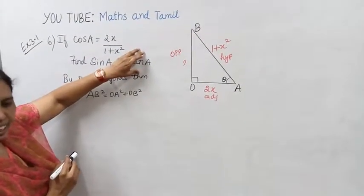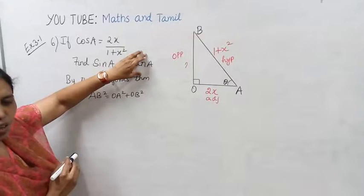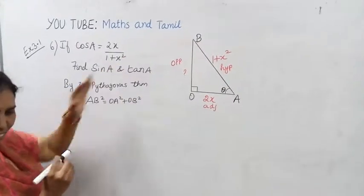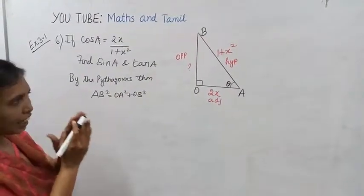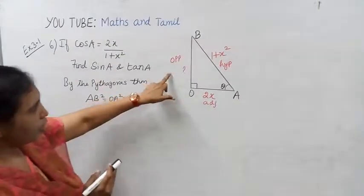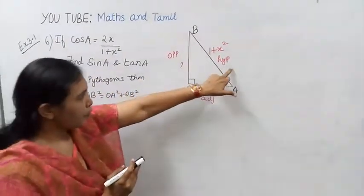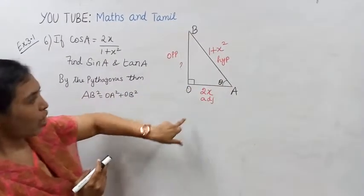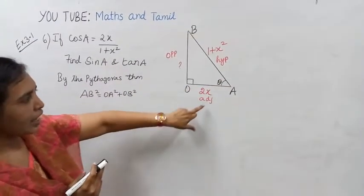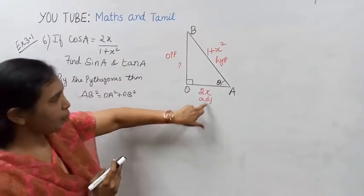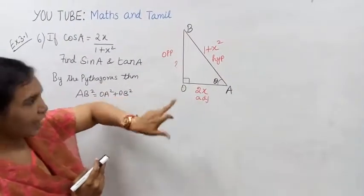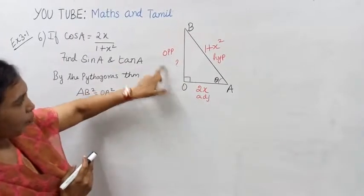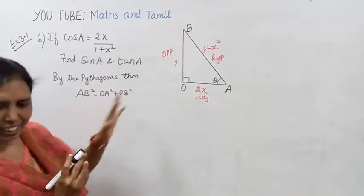Using the mnemonic: old hunter and his old axe — sin A is opposite by hypotenuse, cos A is adjacent by hypotenuse, tan A is opposite by adjacent.